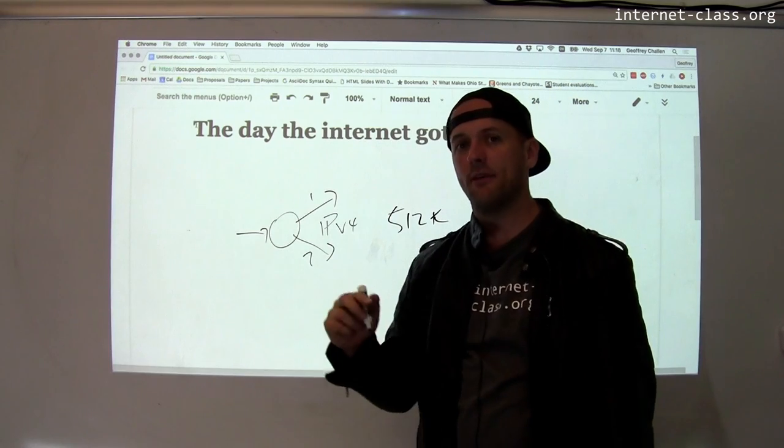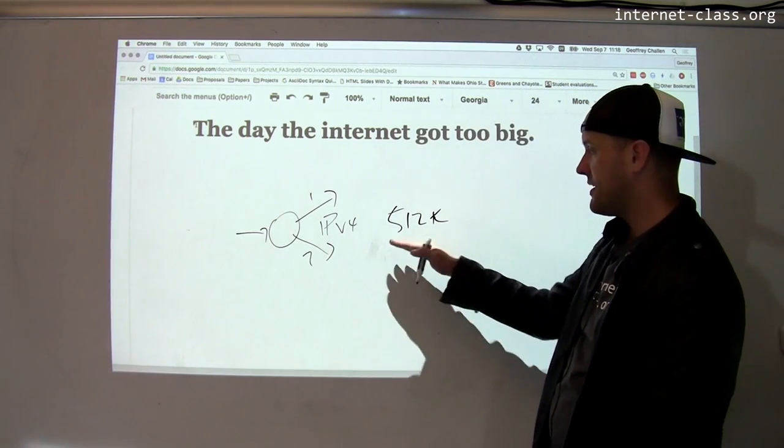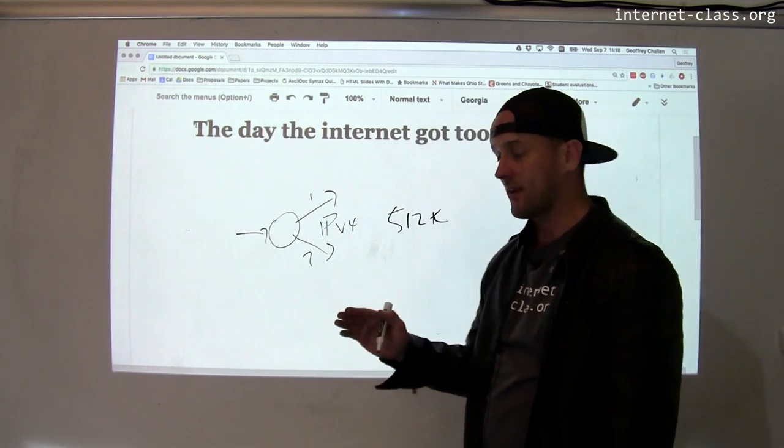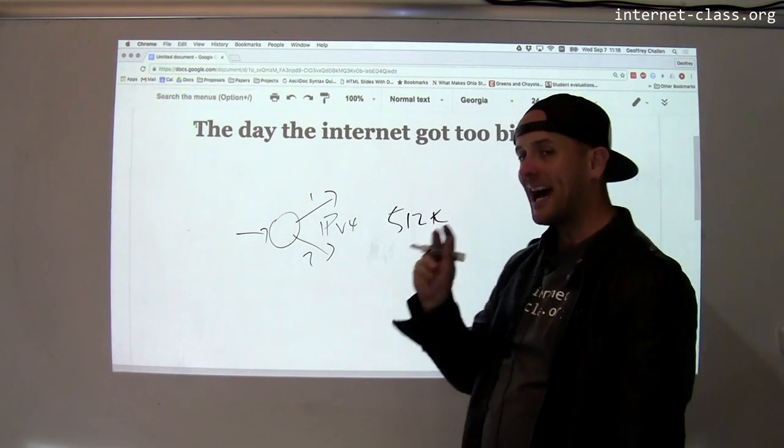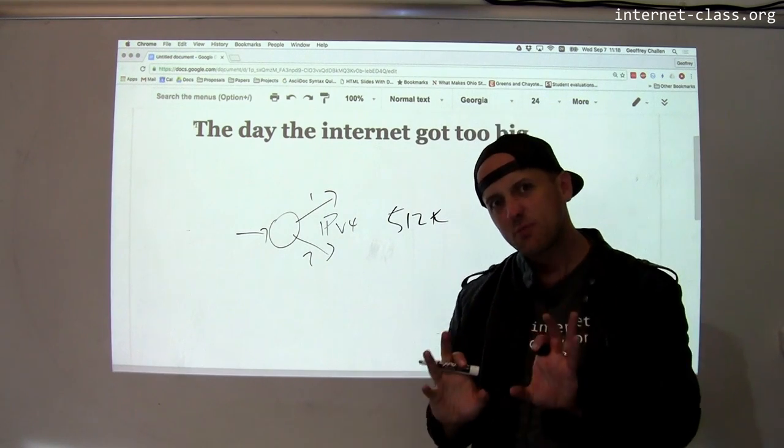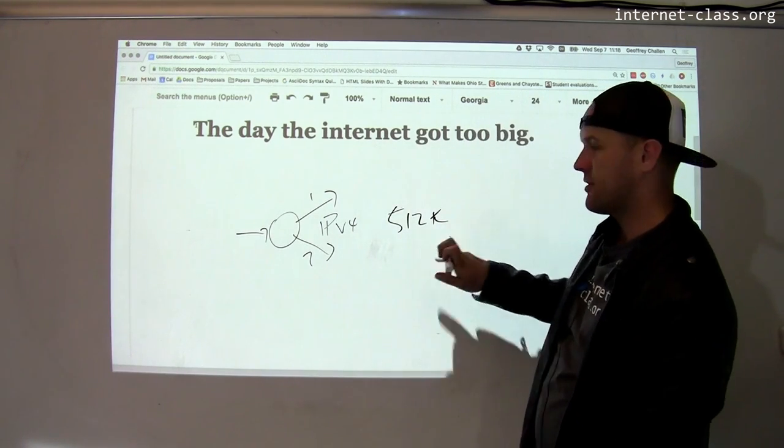That turns out to be half of a megabyte. Half of its entries were reserved for an upgrade to IPv4 called IPv6. So the maximum number of IPv4 addresses it could route quickly using this special piece of hardware that makes routing really fast was 512k.